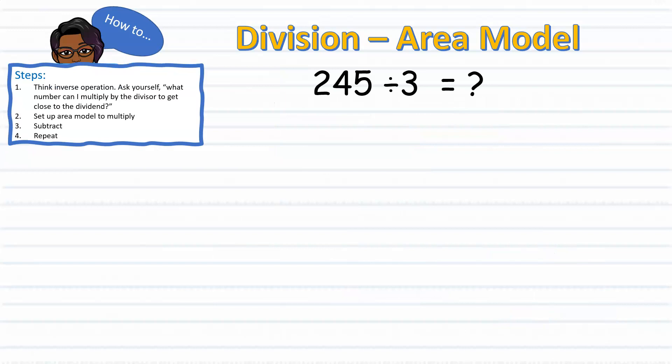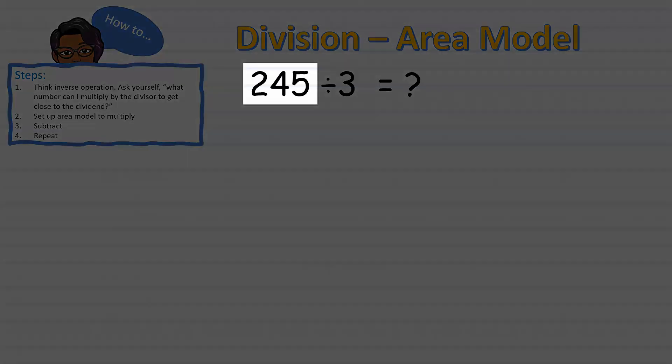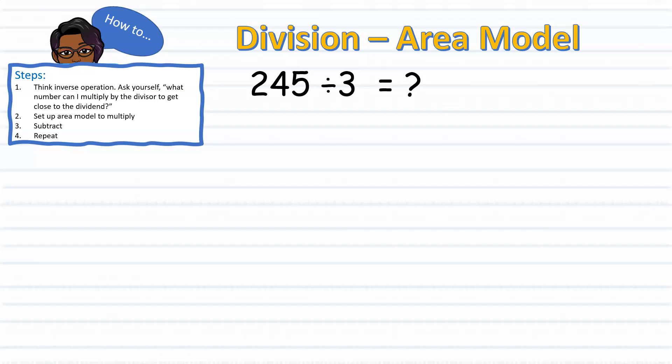We'll begin with dividing a three-digit number by a one-digit number. In this example, we have 245 divided by 3. To begin, we will think in terms of inverse operation. Ask yourself, what number can I multiply the divisor by to get close to the dividend?